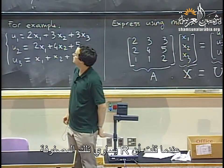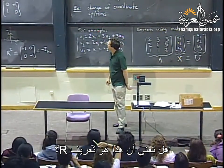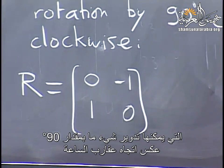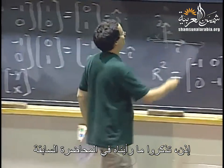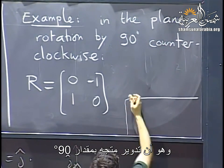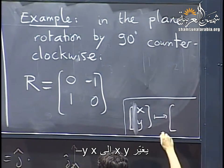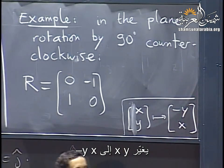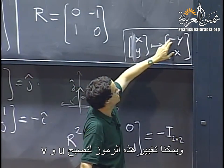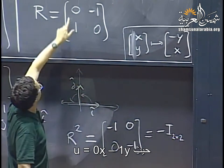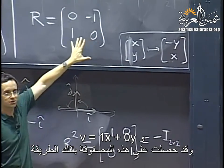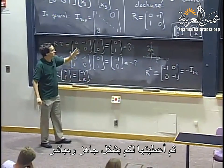How was R found? We know rotating (x,y) by 90 degrees gives (-y, x). Writing u = 0·x - 1·y and v = 1·x + 0·y gives the entries of the matrix. Also, R² = -I, the negative identity matrix, because rotating by 90° twice gives 180°, sending (x,y) to (-x,-y). And R⁴ = I since four 90° rotations return to the start.